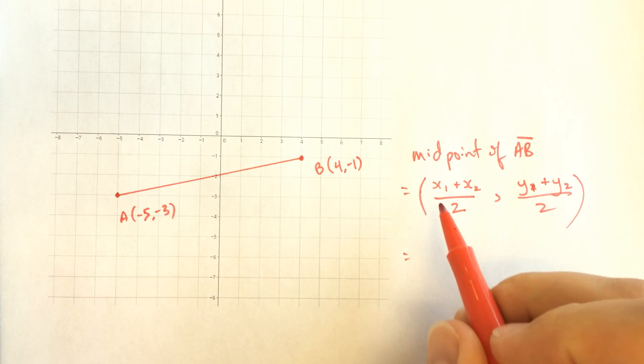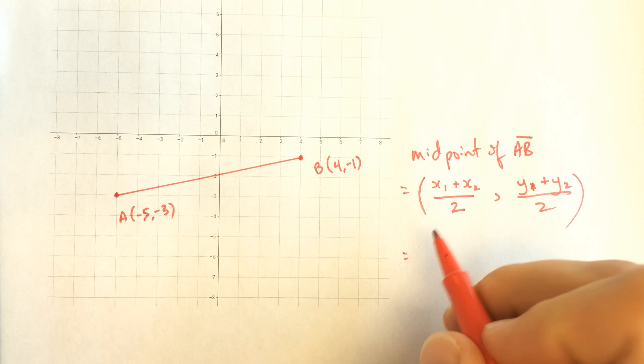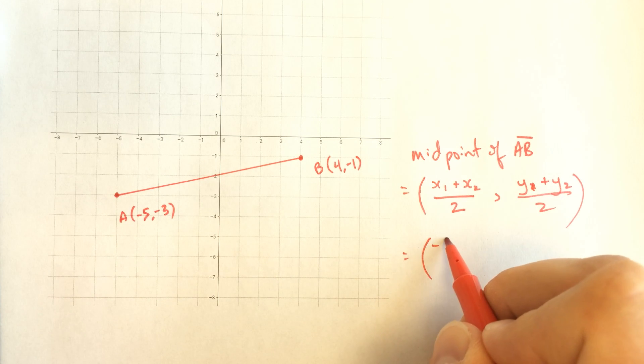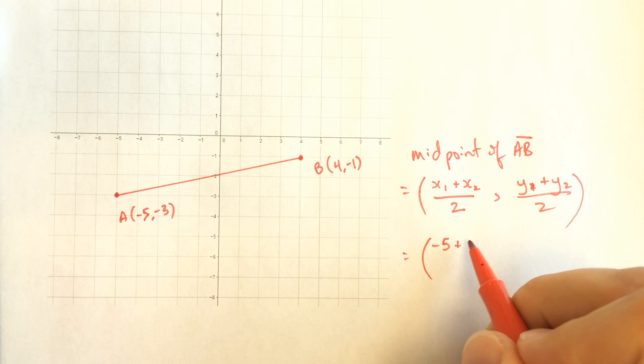So my two x values, let's say that A is the first point here. I'm going to have negative 5 plus my x value from my other point is 4, and I'll divide that by 2.